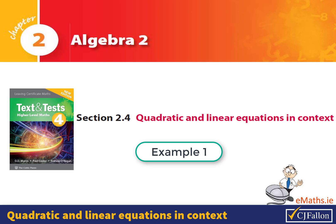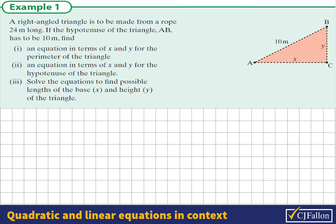Quadratic and Linear Equations in Context, Example 1. A right-angled triangle is made from a rope 24 meters long. If the hypotenuse of the triangle, AB, has to be 10 meters, find: